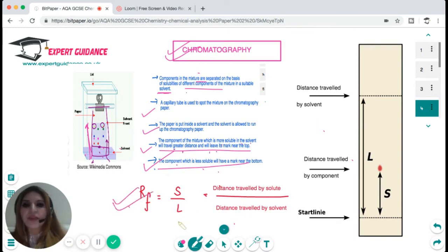How do you calculate the different components? You calculate the retention factor. Retention factor is the distance traveled by your component divided by the total distance traveled by the solvent. For example, in this figure if you see, L is the distance the solvent has traveled and S is the distance the component has traveled, so retention factor is S over L.